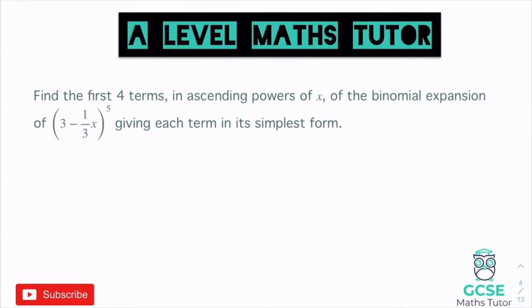This question says: find the first four terms in ascending powers of x of the binomial expansion of (3 − ⅓x)⁵, giving each term in its simplest form. We've got a power of five, so before dealing with the fractions, we'll find the first four terms in the pattern. We'll calculate 5C0 (which is 1), 5C1 (which is 5), 5C2 (which is 10), and 5C3 (which is also 10).